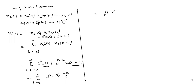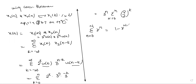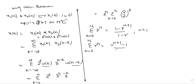We can write 3 to the power N outside because it does not depend on k, leaving the sum of 2 divided by 3, all to the power k. So here we need the geometric progression formula. We have the series: sum from N equal to 0 to small n of R to the power N equals 1 minus R to the power N plus 1, divided by 1 minus R, if R is less than 1. And sum from N equal to 0 to N of R to the power N equals R to the power N plus 1 minus 1, divided by R minus 1, if R is greater than 1.